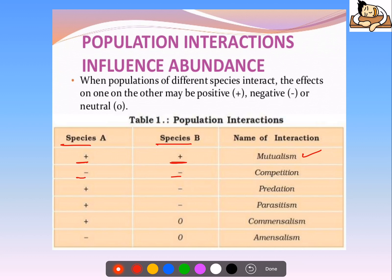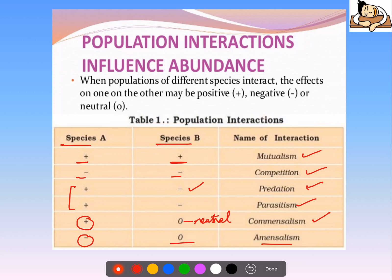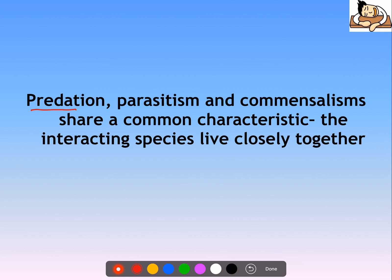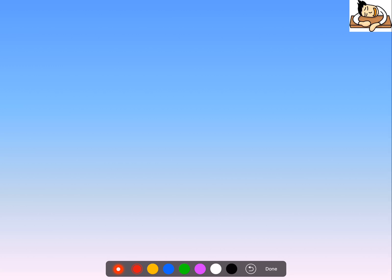If it is harmful, then it is predation or parasitism. These three — predation, parasitism, and mutualism — share a common characteristic: the interacting species have to live closely together. Since this is given in NCERT, you can have an MCQ formed from this statement, so just watch out for such. Let's start with predation.